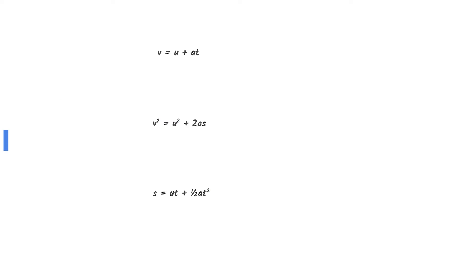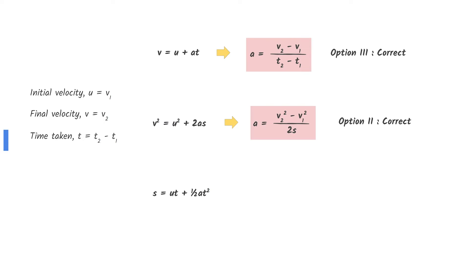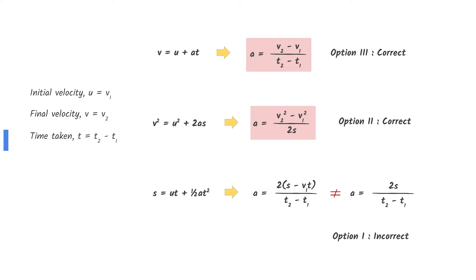Let's start with the three SUVAT equations with acceleration. For this question, the initial velocity u is v1, the final velocity v is v2, and the time taken t is t2 minus t1. The two equations shown here can be rearranged to get the equations in option 2 and 3. The last equation can be arranged to something similar but not the same as the equation in option 1. Therefore, only options 2 and 3 are correct.